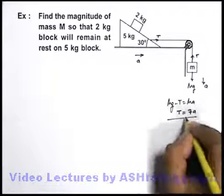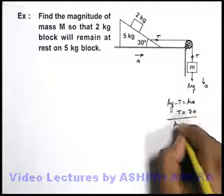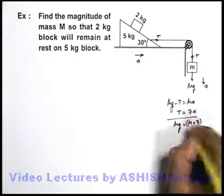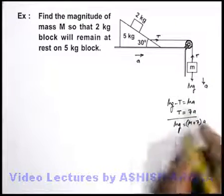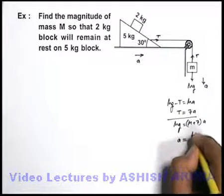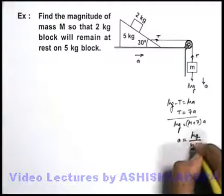On solving this equation we can directly get mg is equal to m plus 7 times a. Here we have just added the two equations to remove the factor of tension. Here we can see the acceleration of system we are getting is mg upon m plus 7.